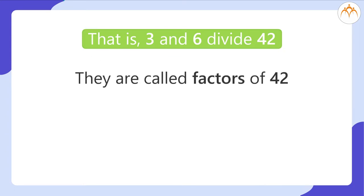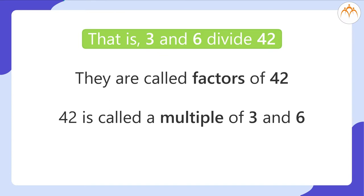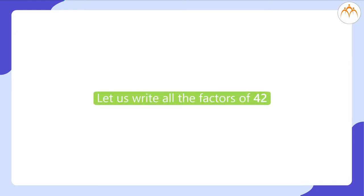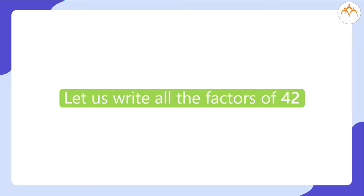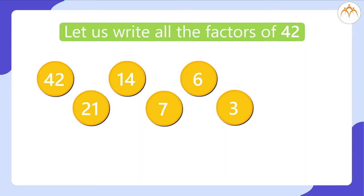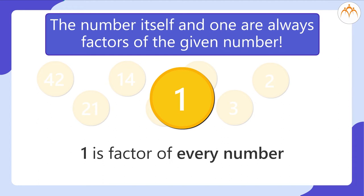They are called factors of 42 and 42 is called a multiple of 3 and 6. 4 and 5 does not divide 42. Hence, they are not the factors of 42. Let us write all the factors of 42: 42 itself, 21, 14, 7, 6, 3, 2, 1. One is the factor of every number. The number itself and 1 are always factors of a given number.